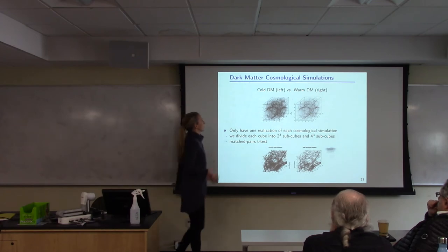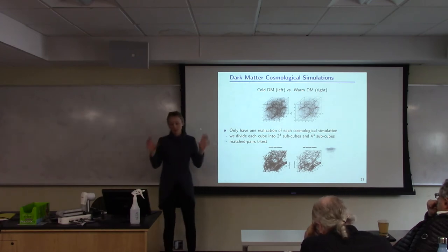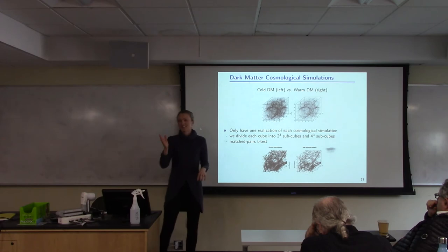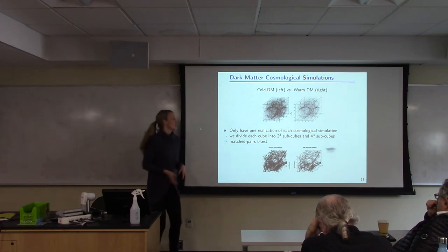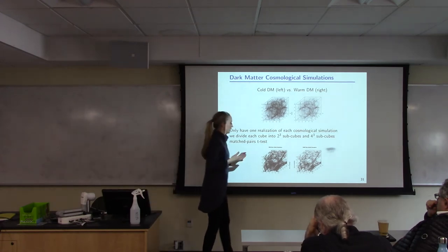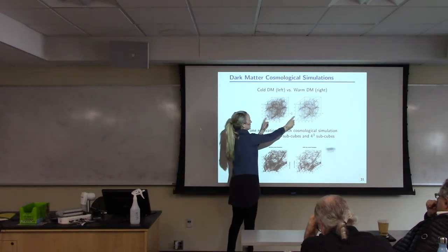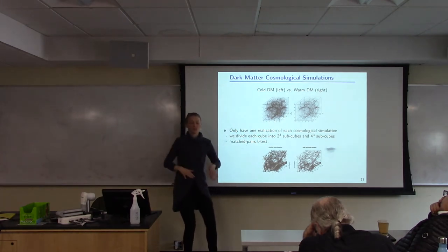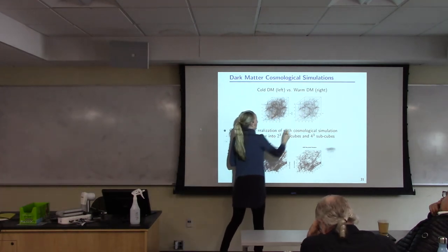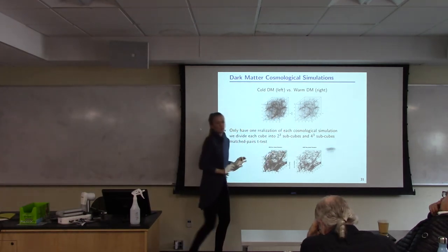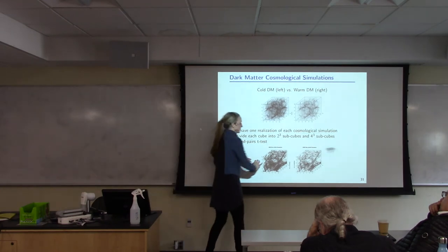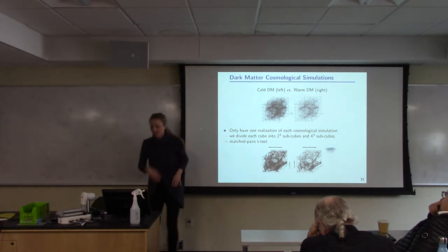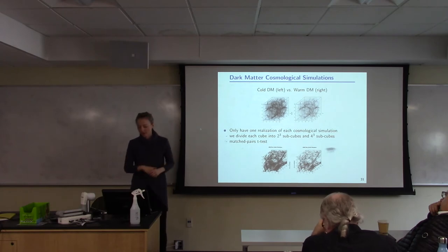So we carried out this simulation study. Then we went to the cosmological simulations, which we only had a young realization of each. Again, we had to cut up the data set, which is not all ideal. But in this case, there's this extra issue where these two realizations, the cold dark matter and the warm dark matter, had the same initial conditions. So there's a correlation between the two, which you can kind of see in the structure. And so we did what's called a matched pair test. So again, one bunch of details just in the interest of time. But it was a way of trying to accommodate that correlation that's present.